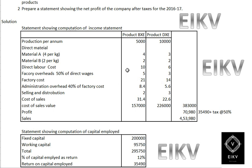Factory overhead at 50% of direct labor: 5 for BXE and 3 for DXE. Taking the total of all elements gives the factory cost. Administration overhead at 40% of factory cost: 8.4 for BXE and 5.6 for DXE. Selling and distribution: 3 for BXE and 2 for DXE. Therefore, cost of sales per unit: 31.4 for BXE and 22.6 for DXE.